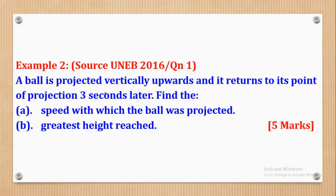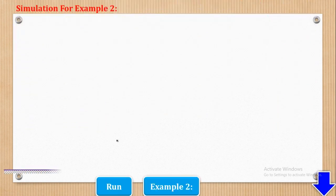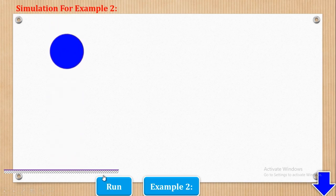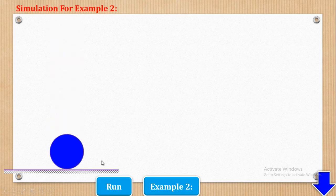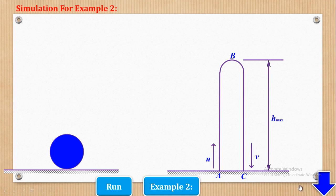Now we shall go to Example 2, which came from UNEB 2016, Paper 2, Question 1. It says that a ball is projected vertically upwards and returns to its point of projection three seconds later. Part A: find the speed with which the ball was projected. Part B: find the greatest height reached. We shall make a simulation of what is given — the ball moves upwards to a maximum point and then comes back. In our sketch, A is the starting point, B is the maximum point, and C is the return position. The initial velocity is unknown, so it should be U, the final velocity is V, and maximum height is H max.